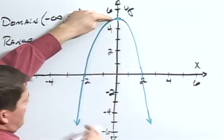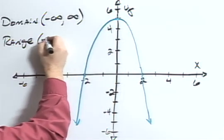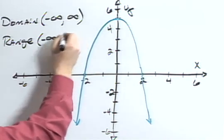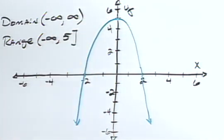it would be from negative infinity up to 5. So I would have negative infinity to 5, and since it would include the 5, I would use a bracket.